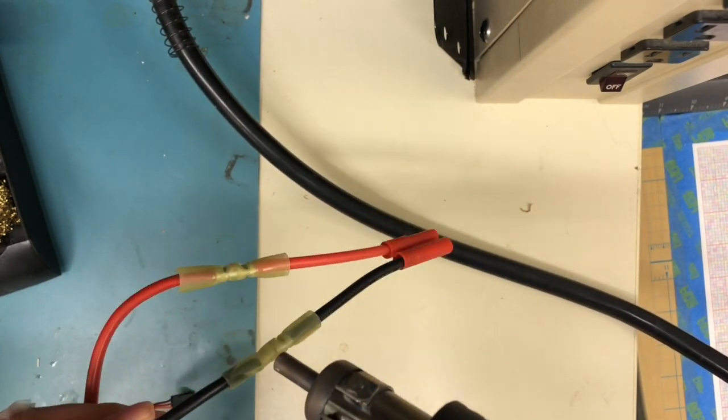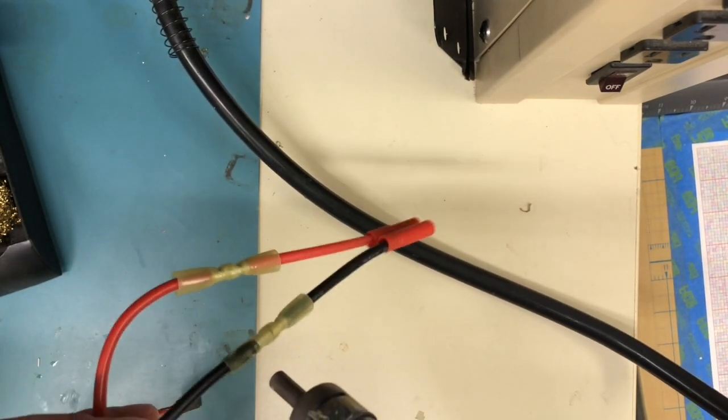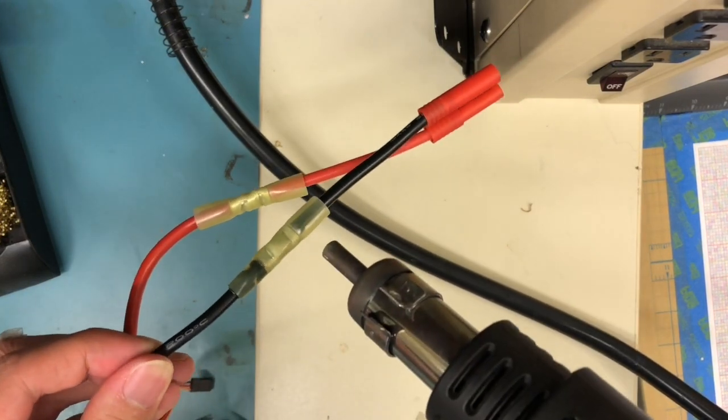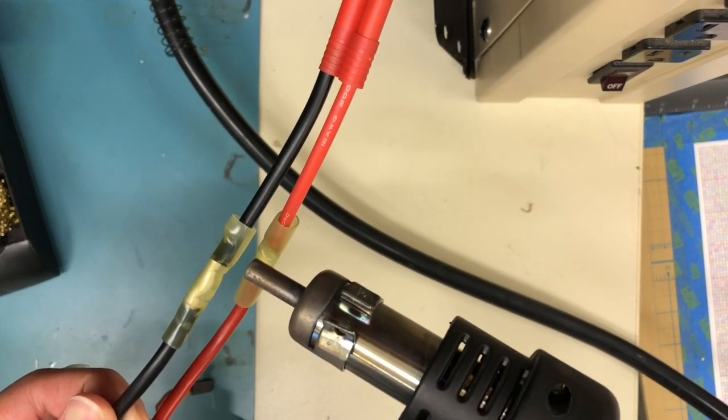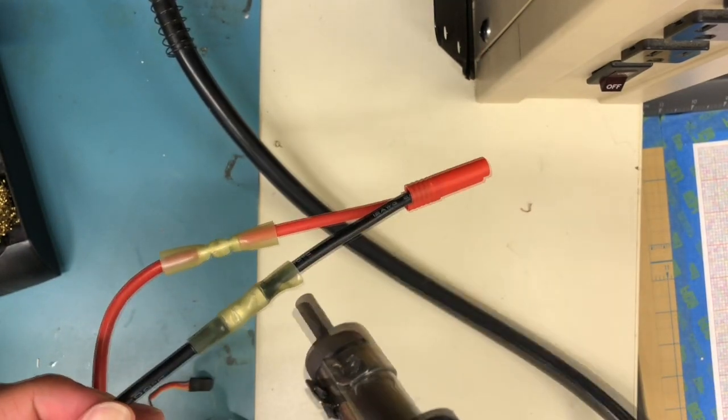After that, use a heat gun to uniformly heat the solderless wire connection until it has completely shrunk. Do not apply excessive heat as it may melt the connections.